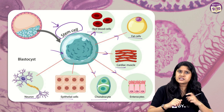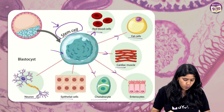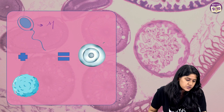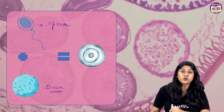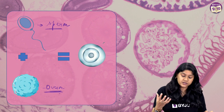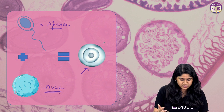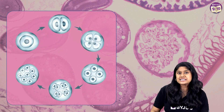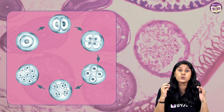Now that we are clear with this, let's start from the beginning. All of this starts once there is a fusion of the gametes. Sperm and ovum will fuse and that process is called fertilization. Once the fusion of sperm and ovum occurs, we have the formation of a zygote. After that, the single cell will start dividing further — from one cell to two, two to four, four to eight — and slowly the number will increase.